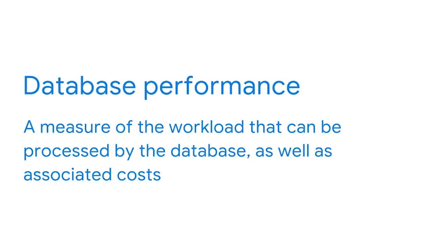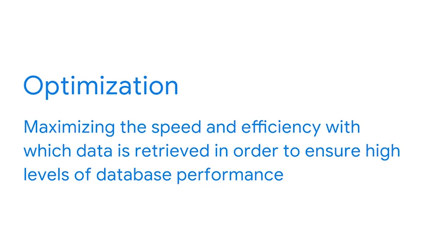And there you have the five factors of database performance: workload, throughput, resources, optimization, and contention. Coming up, we're going to check out an example of these factors in action. We've also been learning a lot about database performance — a measure of the workload that can be processed by the database as well as associated costs. We'll focus on optimization and how BI professionals optimize databases by examining resource use and identifying better data sources and structures, to enable the system to process the largest possible workload at the most reasonable cost, which requires speedy response time.